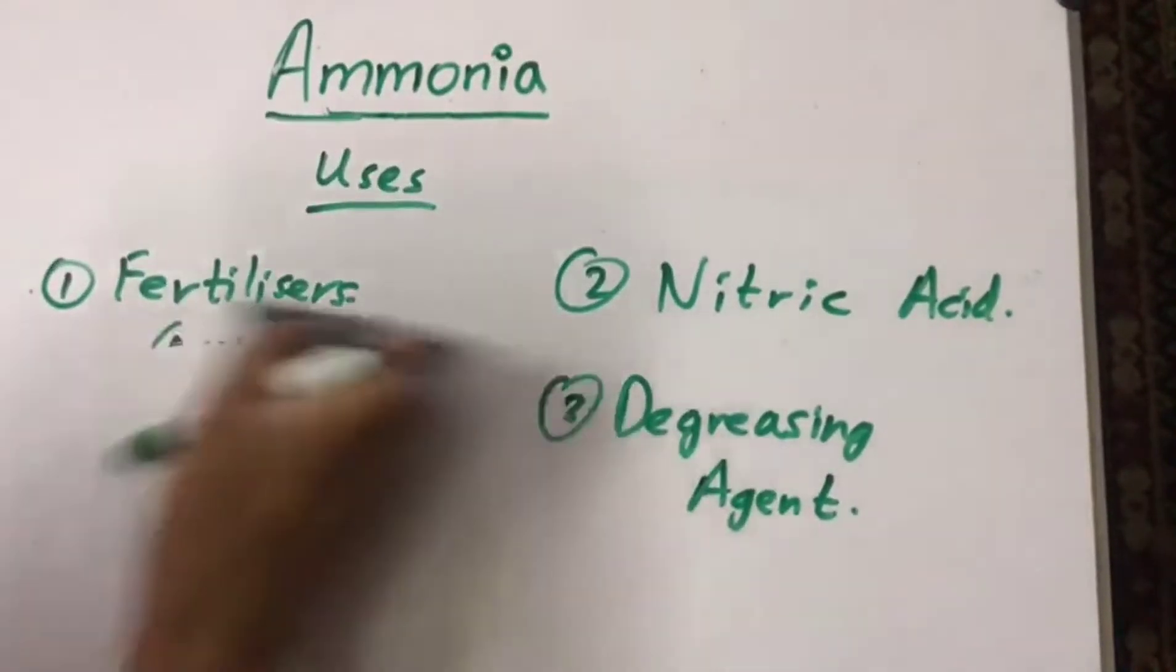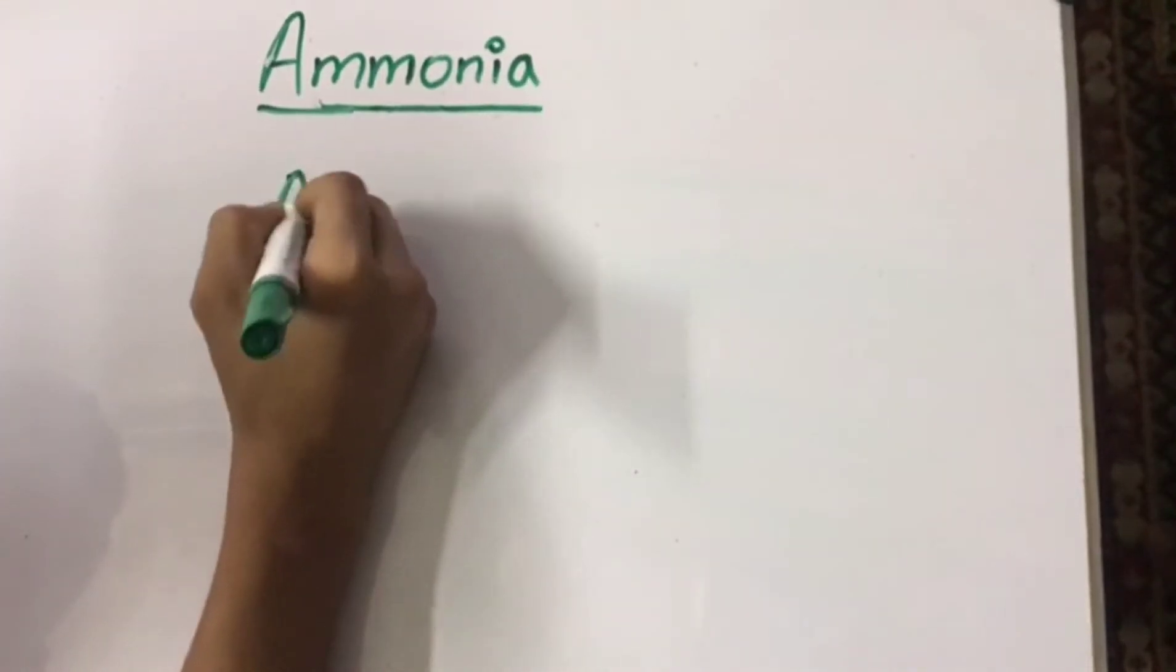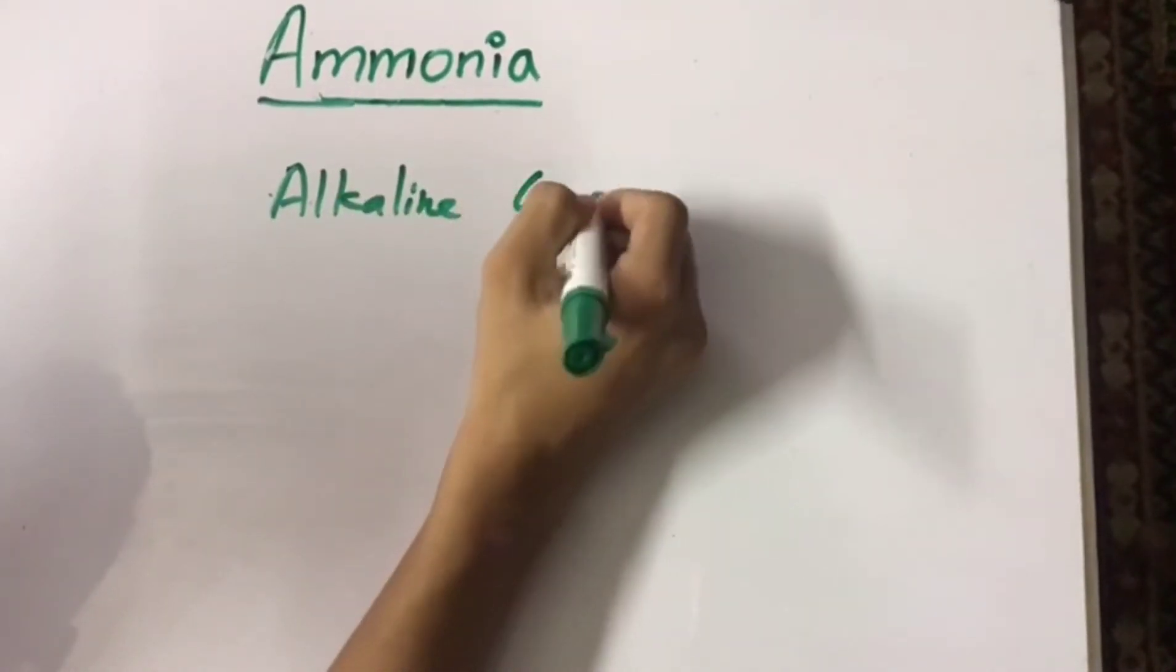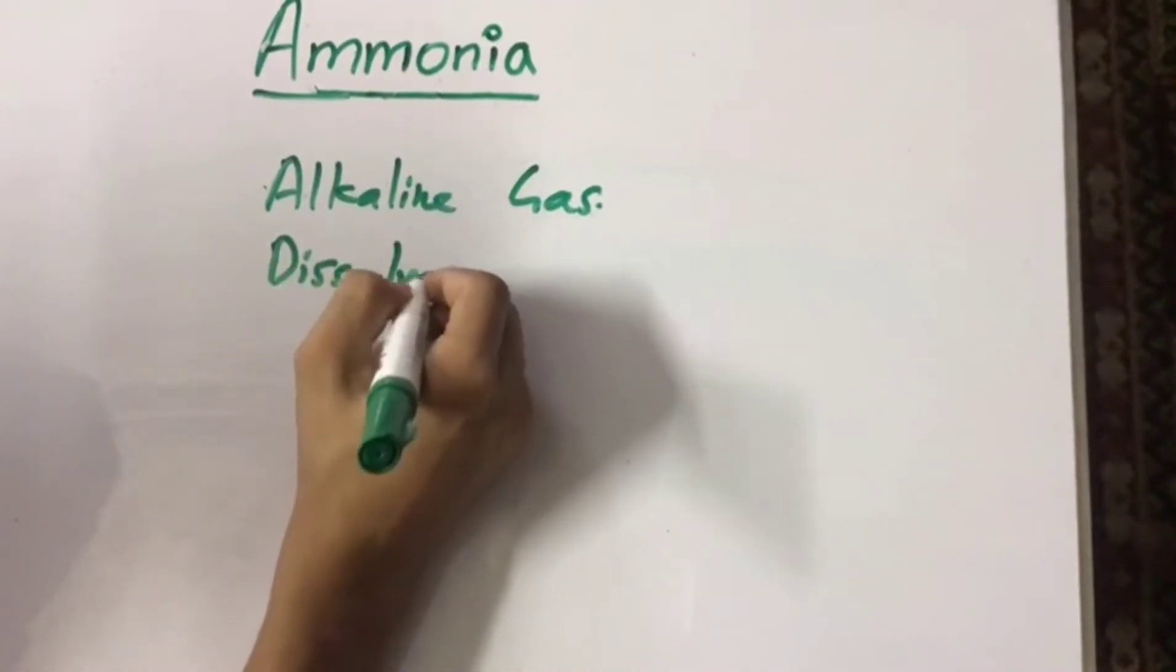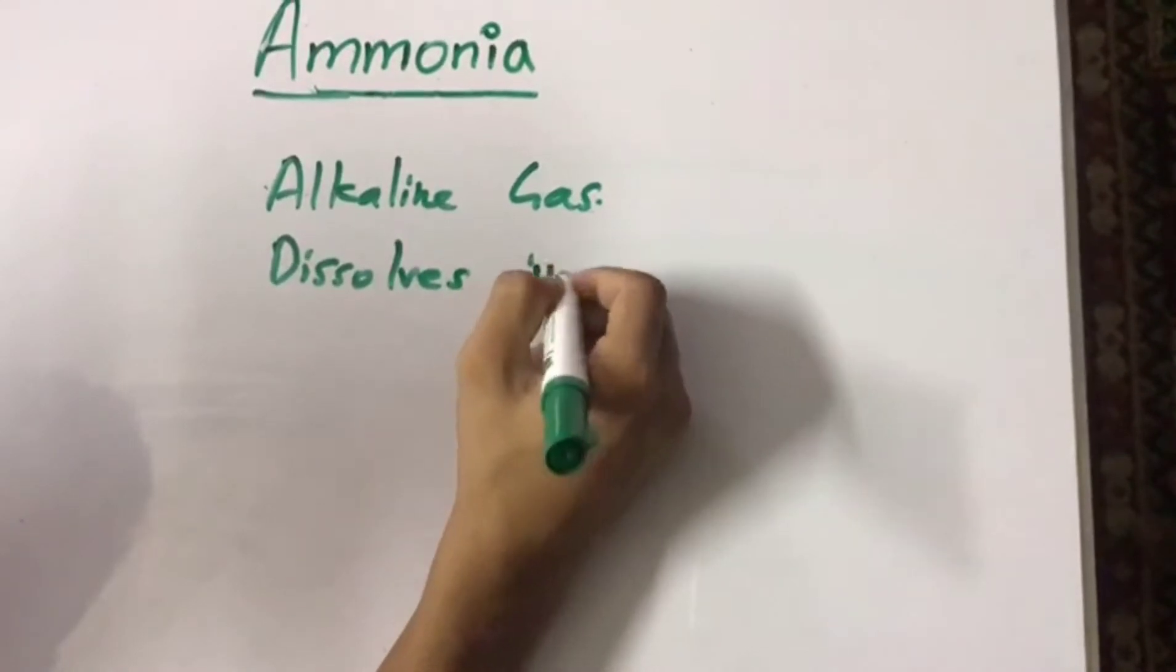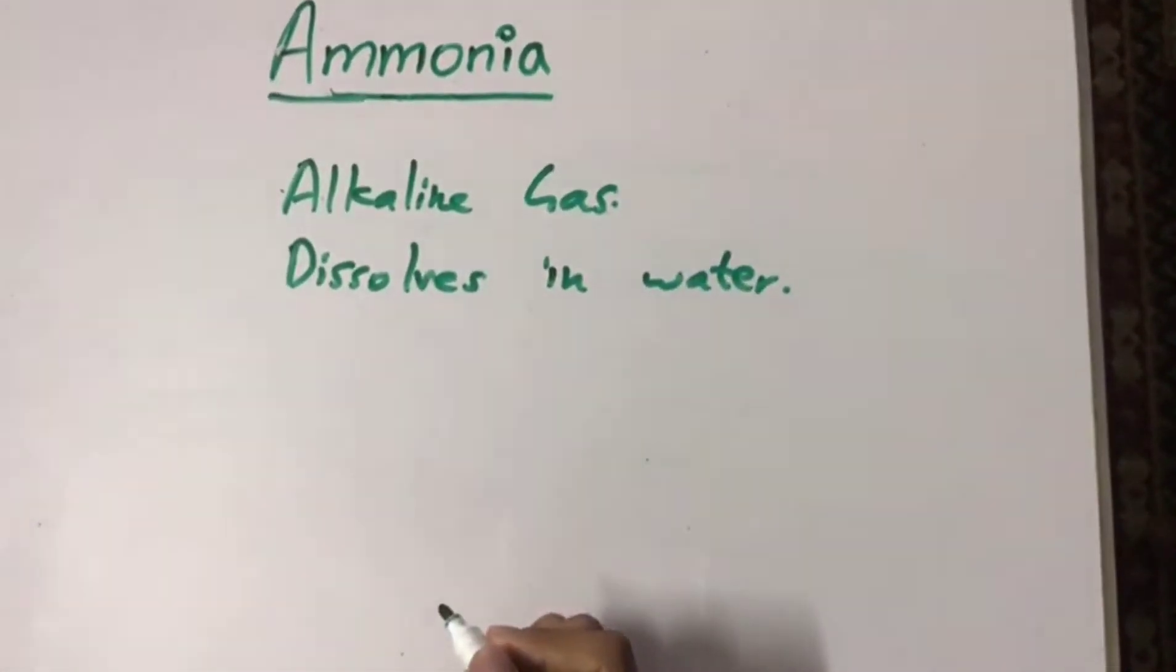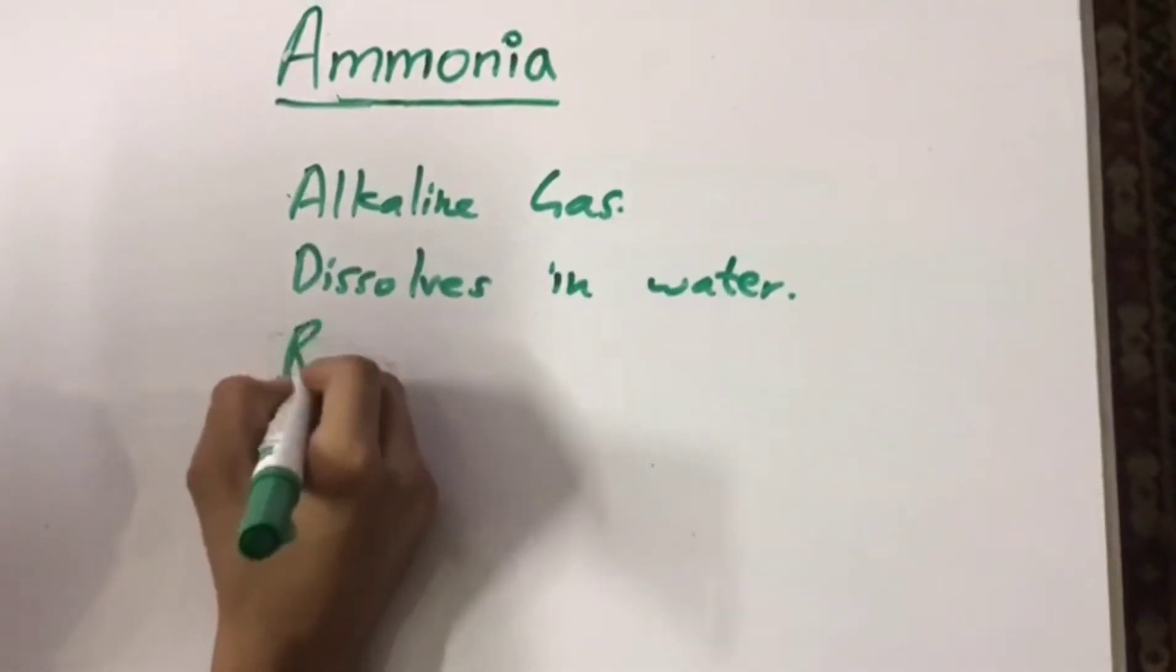Ammonia is the only alkaline gas. It dissolves in water. Also ammonia turns red litmus paper blue.